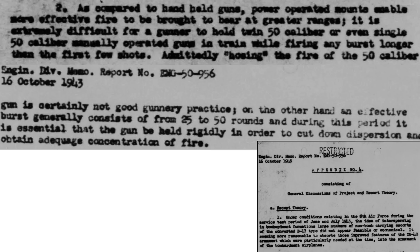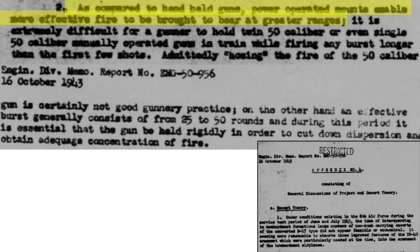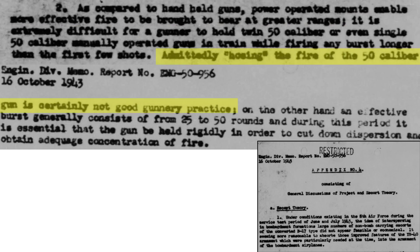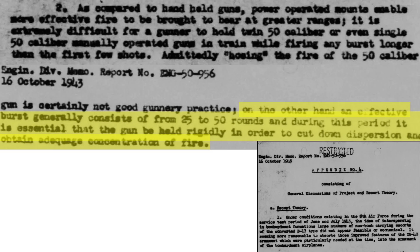The few-round burst effectiveness is backed up in an October 1943 USAAF Engineering Division appendix memo titled General Discussion of Project and Escort Theory. A bomber's power turret will deliver more effective and longer range fire than handheld flexible mount guns, since powered turrets provide much better gun stabilization by cutting down on gun vibrations. Bomber gunners will struggle to deliver accurate flexible mount machine gun groupings outside of the first few rounds. Machine gun hosing fire is not good gunnery practice. An effective burst is between 25 and 50 rounds, but the gun must be held rigidly — only power turrets can provide this degree of rigidity, not handheld machine guns.